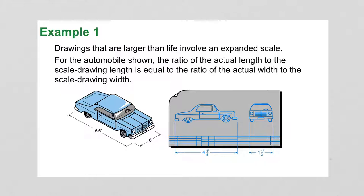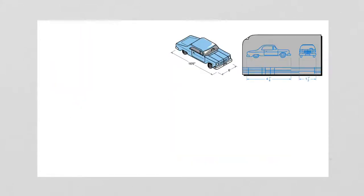Drawings larger than life involve an expanded scale. For the automobile shown, the ratio of the actual length to the scale drawing length is equal to the ratio of the actual width to the scale drawing width. They have to correlate. So what we're trying to find here is what is the ratio?